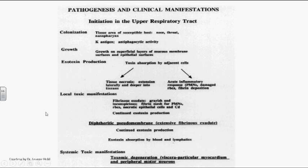Pathogenesis and clinical manifestations: These organisms colonize in susceptible host tissues — in the nose, throat, and nasopharyngeal areas. The K antigen prevents phagocytic activity. Growth on superficial layers of mucous membrane and epithelial surfaces occurs because of pili, K antigen, and O antigen. By inhibiting phagocytosis, the organisms produce exotoxin in low iron conditions, causing tissue necrosis that allows deeper tissue penetration and severe damage such as punched-out ulcers.